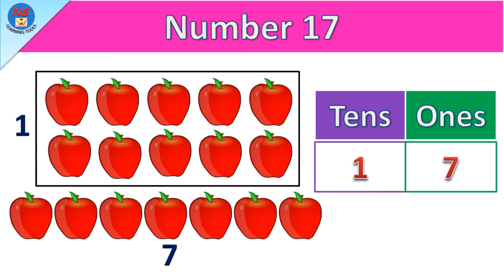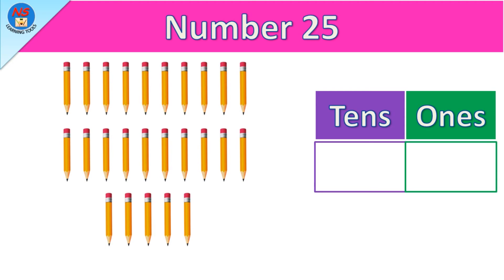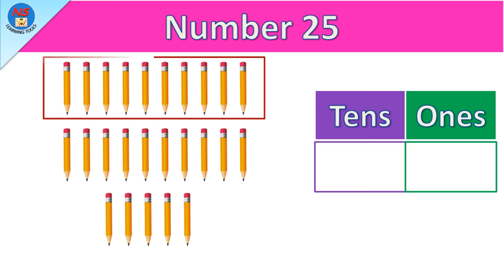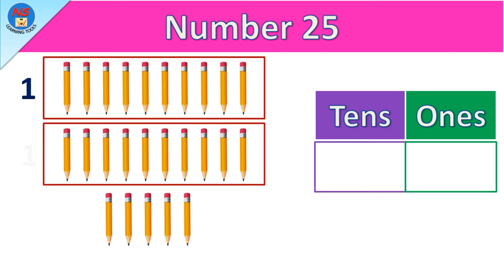Here we have 25 pencils. Let's count: one, two, three, four, five, six, seven, eight, nine, ten. These ten pencils make one set of tens. Now let's count the remaining pencils: one, two, three, four, five, six, seven, eight, nine, ten. These ten pencils make a second set of tens.